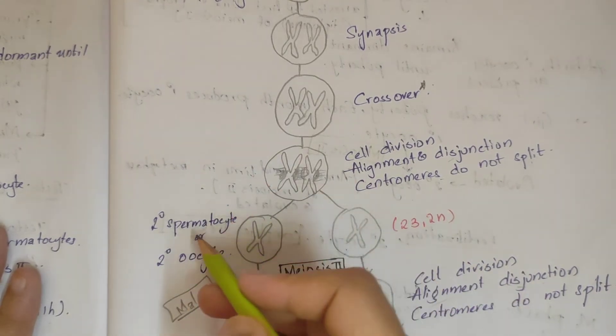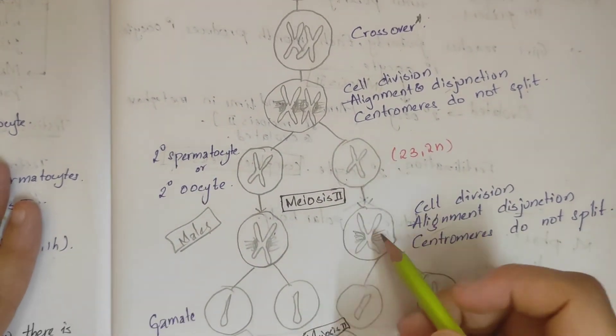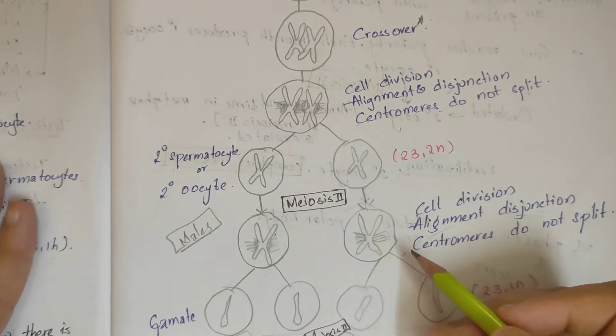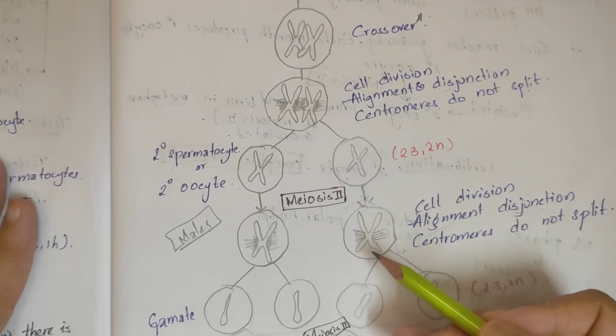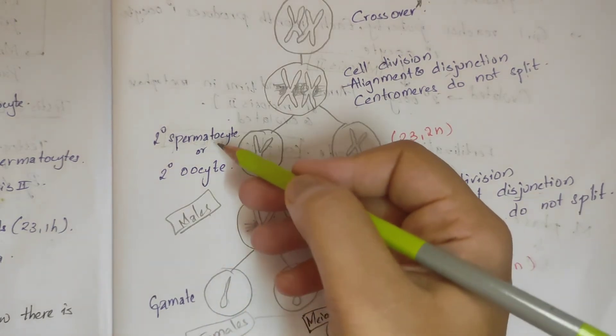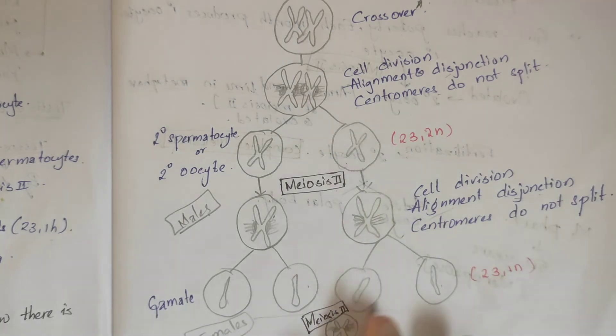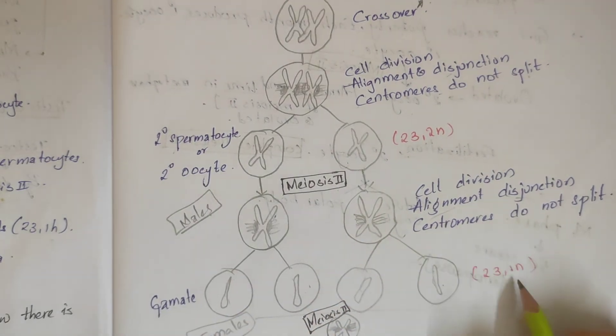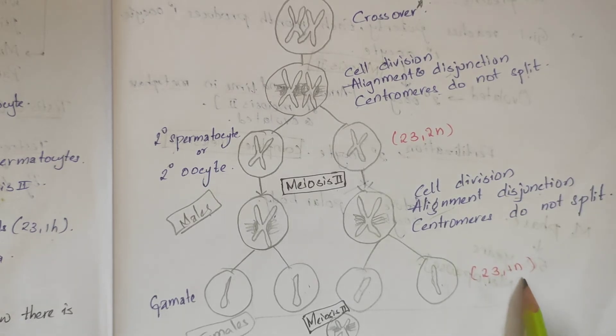Next is meiosis 2. In meiosis 2, it undergoes divisions and forms 4 spermatids - that is, each secondary spermatocyte forms into 2 spermatids, which has finally 23 chromosomes and is haploid.